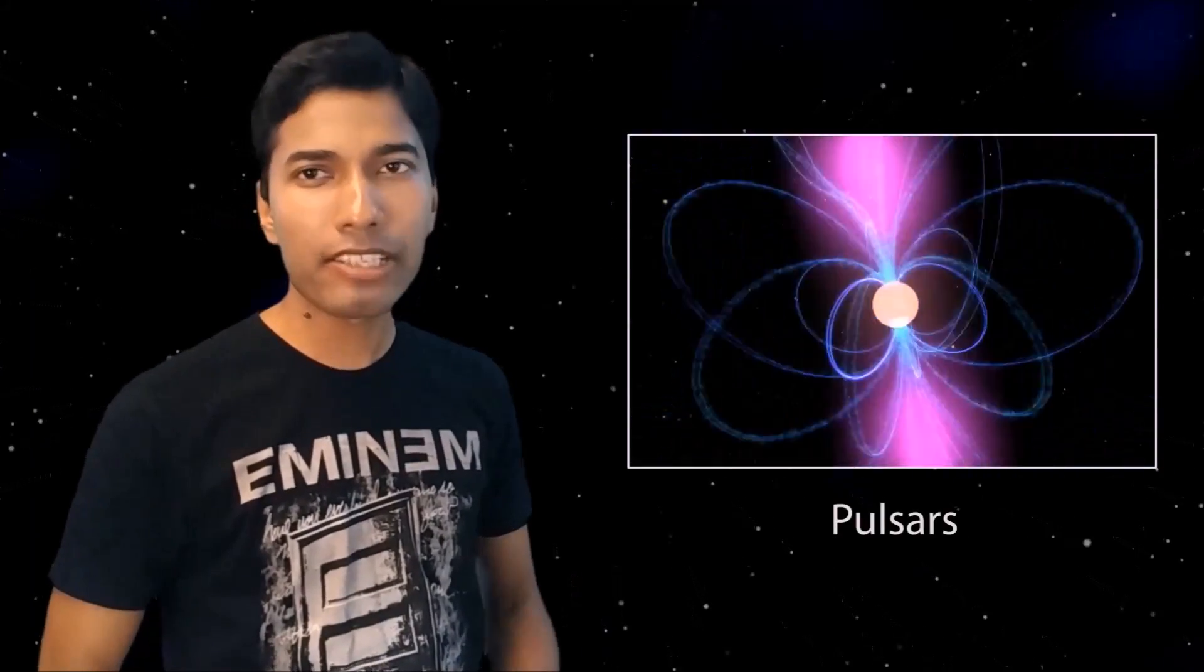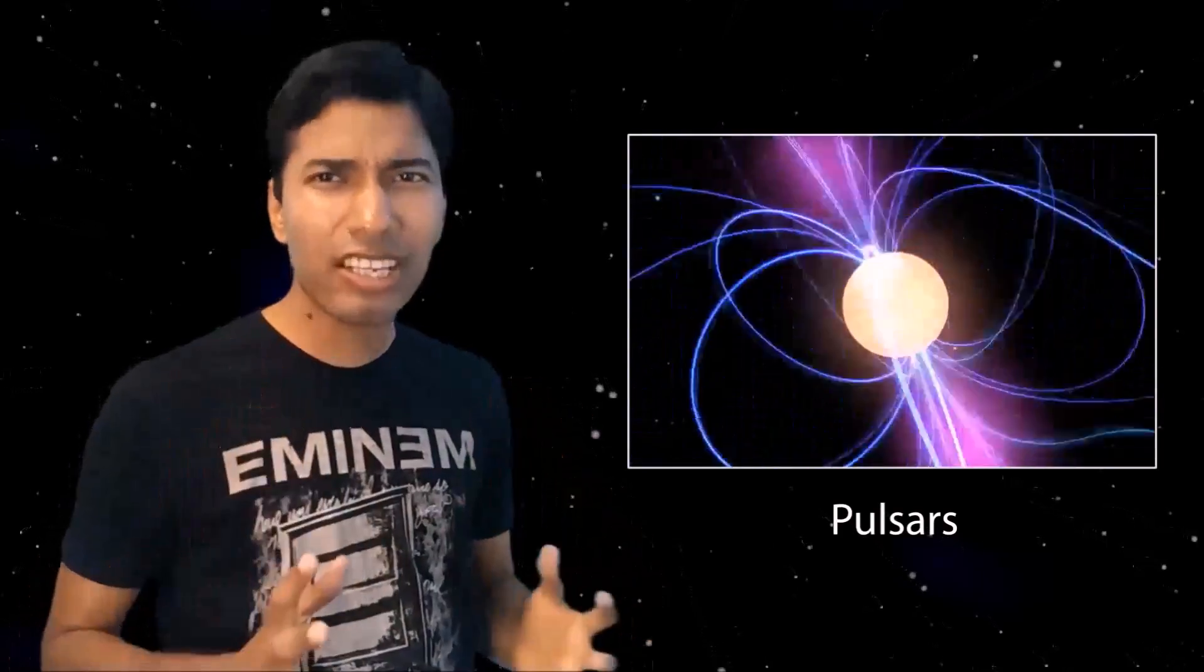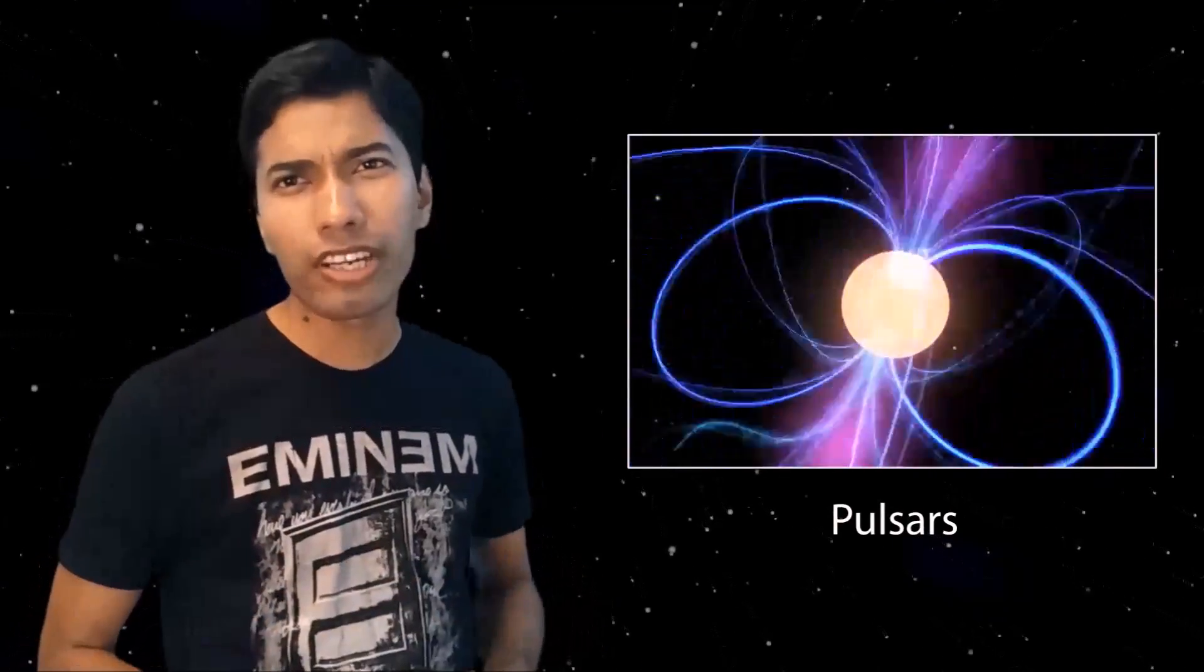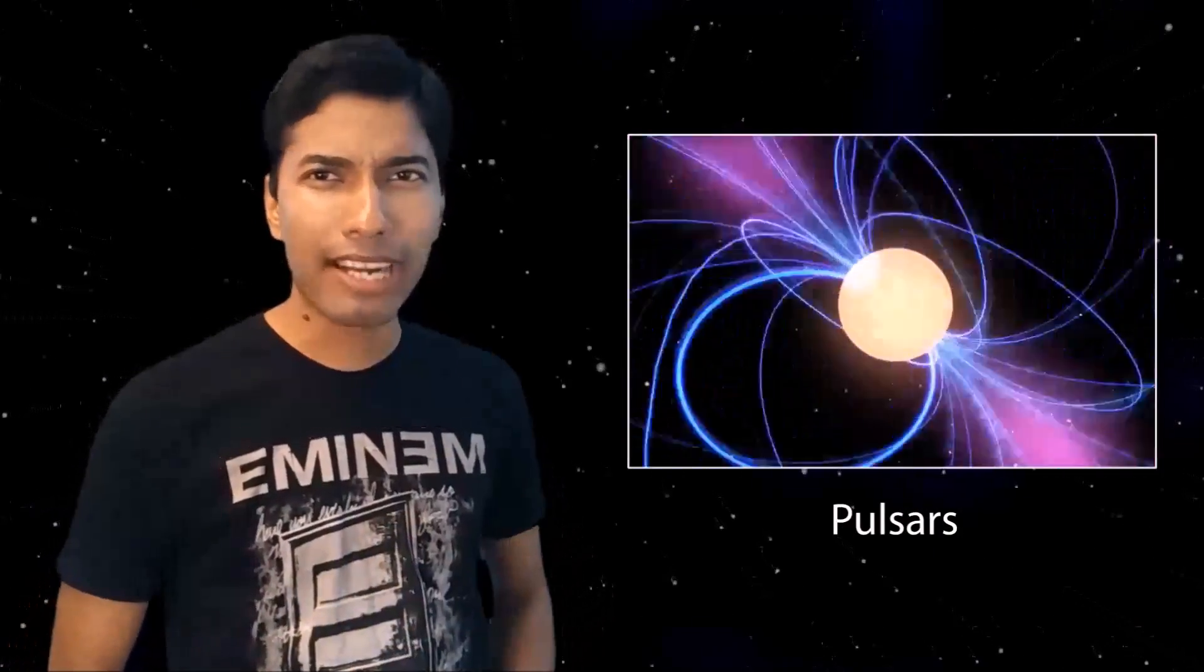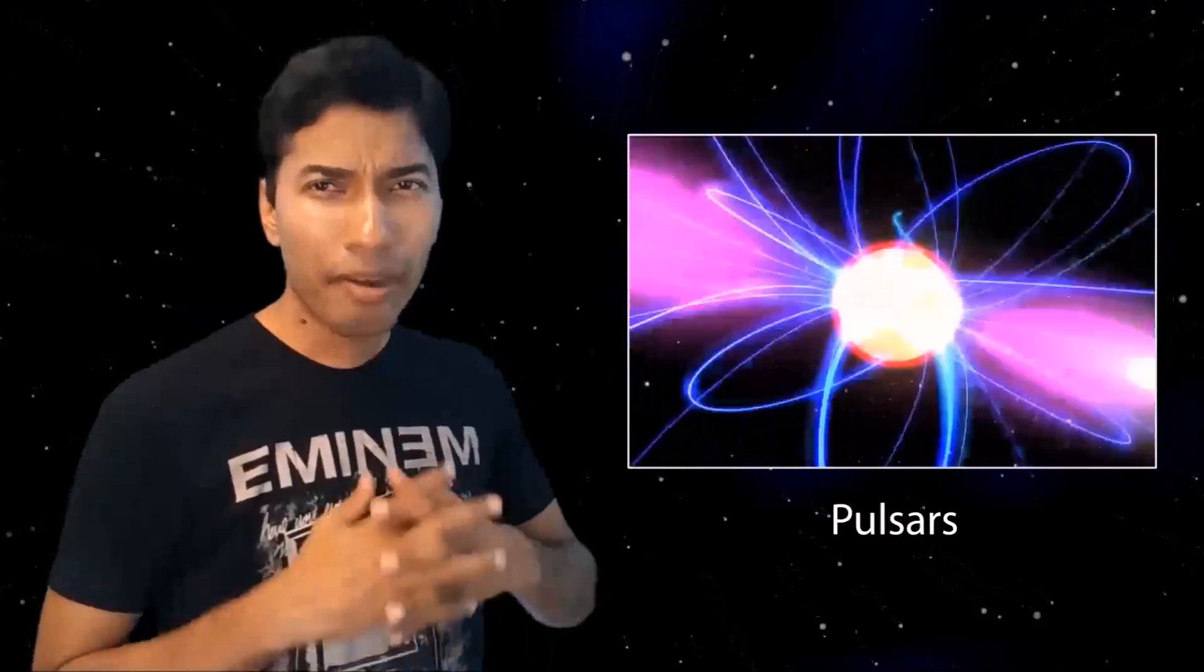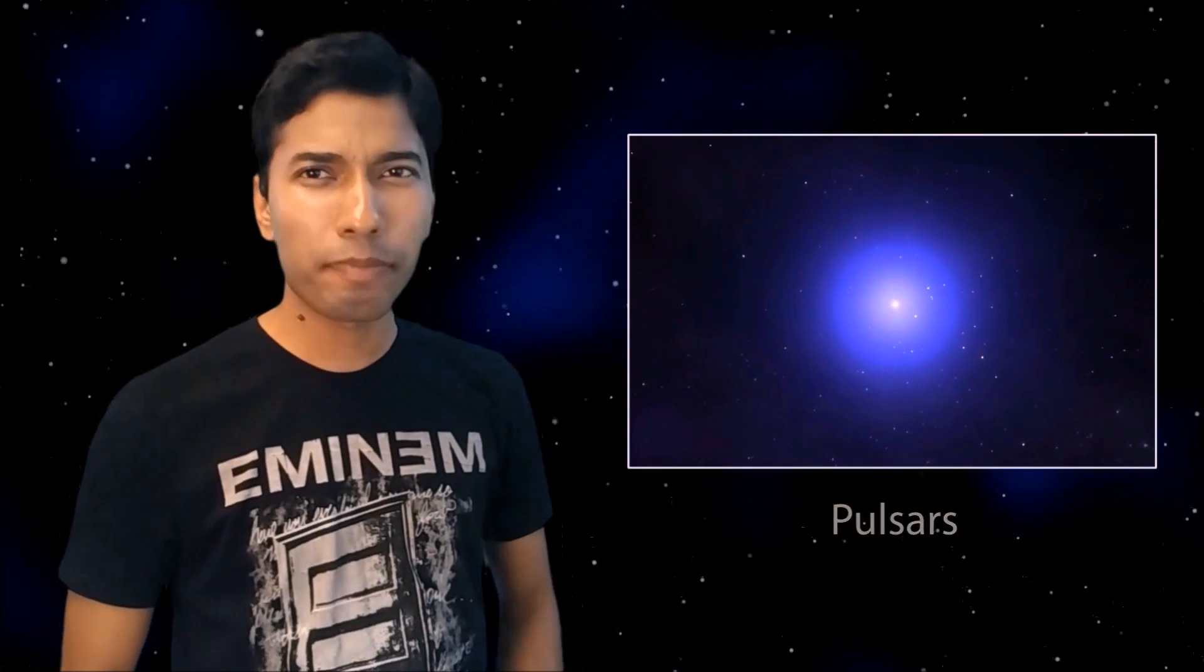The incredibly strong magnetic field of neutron stars gives rise to twin beams of light from its two magnetic poles. Now, just like Earth, the magnetic field of the neutron star does not have to line up with the axis of rotation. So the twin beams of light will sweep across the sky and from afar we'll see pulses of increased brightness. They are known as pulsars.